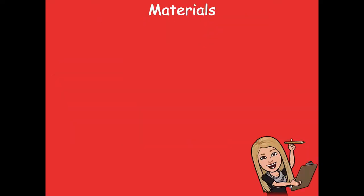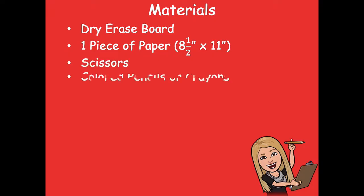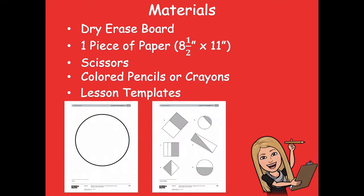The materials that you'll need for this lesson are your dry erase board, one piece of paper that's 8½ by 11 — that's just a regular sheet of paper — scissors, colored pencils or crayons, and you'll need the lesson templates for lesson 9. So make sure you grab those materials before you get started.